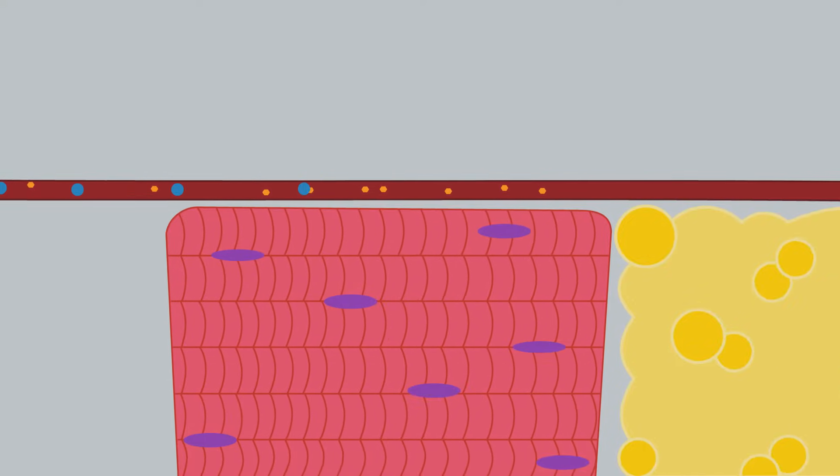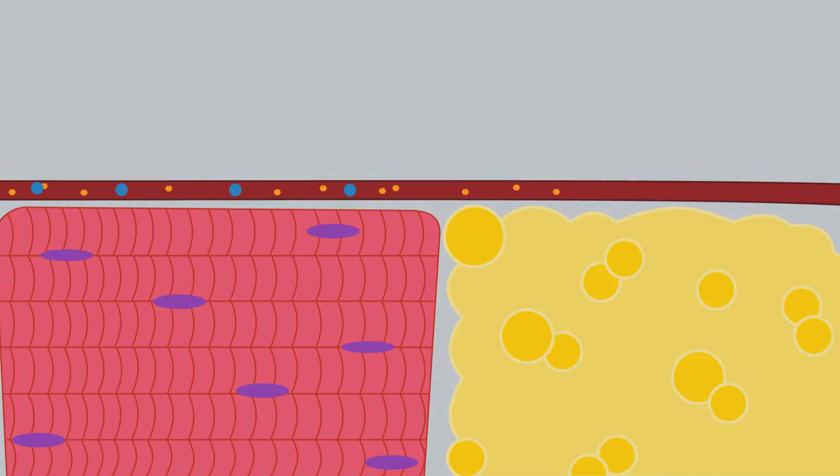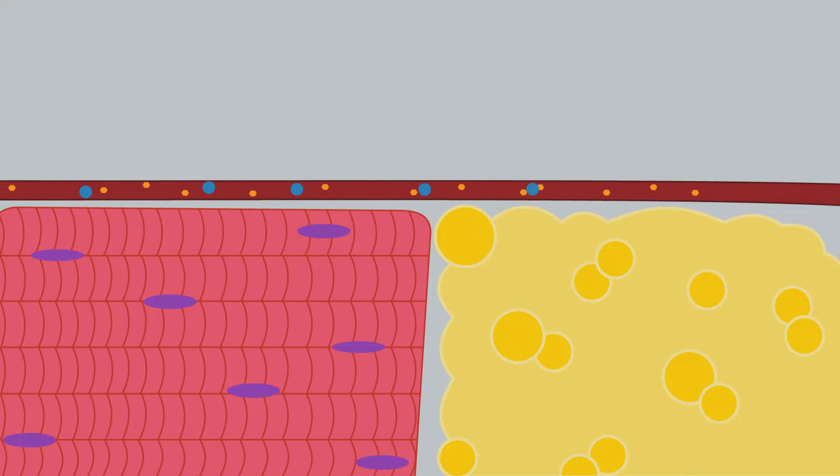In most individuals, insulin binds to a specific receptor on the plasma membrane of cells. We will be focusing on skeletal muscle and adipose tissue cells.